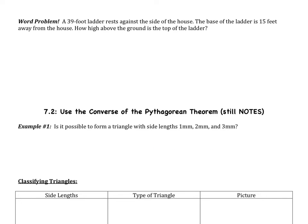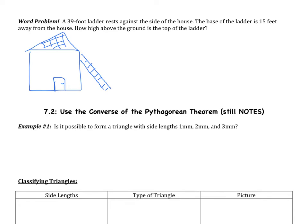Now we're moving on to the last problem of section 1, which is a word problem. It says: a 39-foot ladder rests against the side of a house. The base of the ladder is 15 feet away from the house. How high above the ground is the top of the ladder? Let's start by drawing a picture. We have a house, and the ladder rests against it. Label the figure and answer the question.